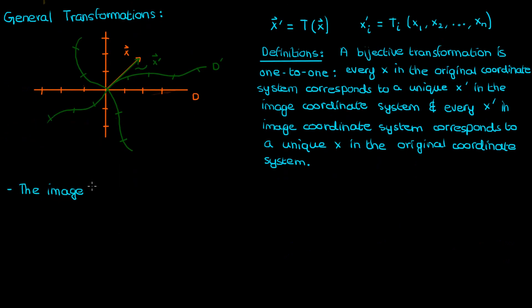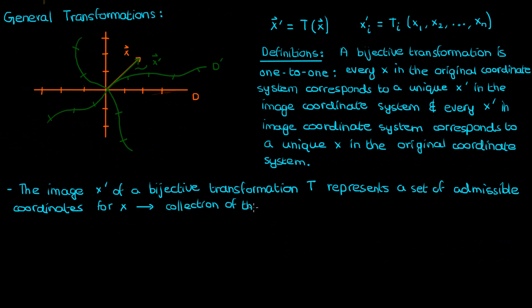The image X prime of a bijective transformation T represents a set of admissible coordinates for X and the collection of all these admissible coordinates, the aggregate of these admissible coordinates, comprises a coordinate system.